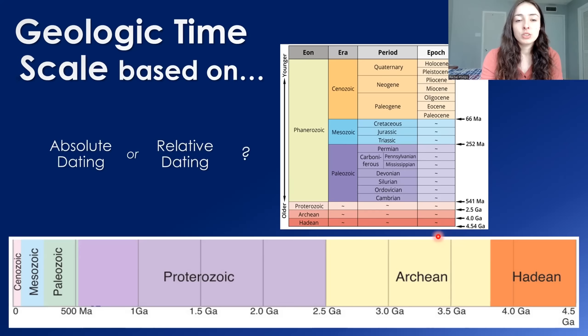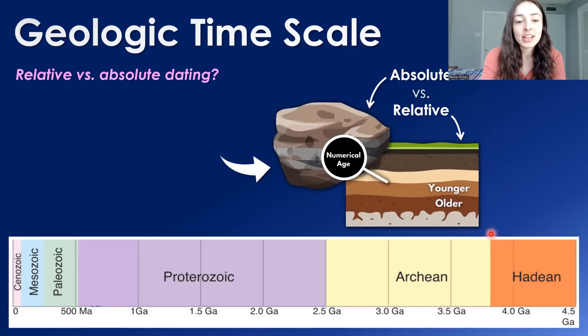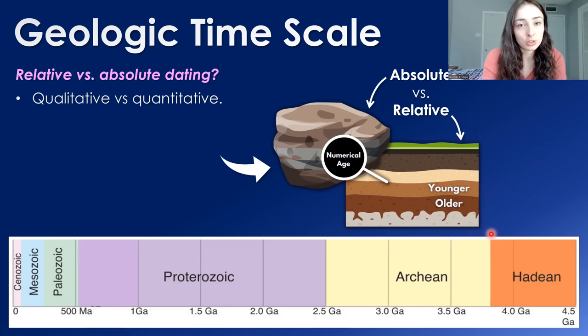So how was the geologic timescale constructed? What are the breaks between time periods and epochs based on — absolute or relative dating? Relative dating is qualitative and absolute dating is quantitative. You can get numerical ages, with certain error bars, from absolute dating with just one rock. But relative dating is qualitative — you can only get dates of rocks relative to other rock layers or formations.